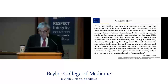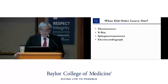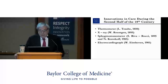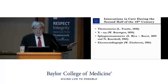What did Osler leave out? He never mentions thermometers, x-rays, sphygmomanometers, or electrocardiographs—all of which were available to him when he gave these lectures. The thermometer had been in place since 1850. Röntgen described x-rays in 1895. The sphygmomanometer was developed in 1895, and Einthoven described electrocardiographs as early as 1901. All of this was available; he simply leaves it out without discussing it in relation to clinical medicine.